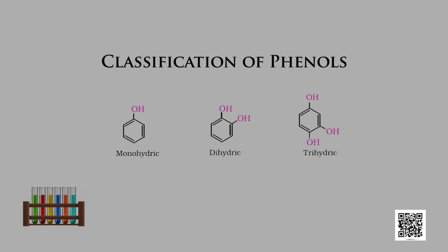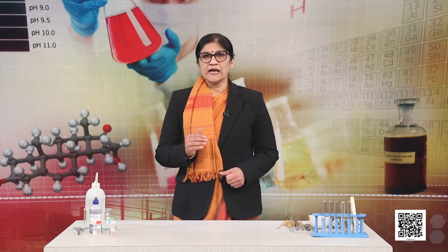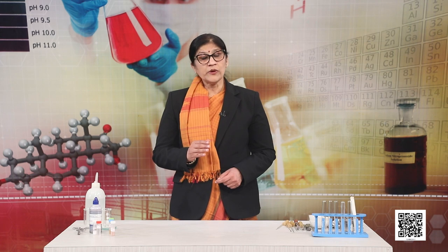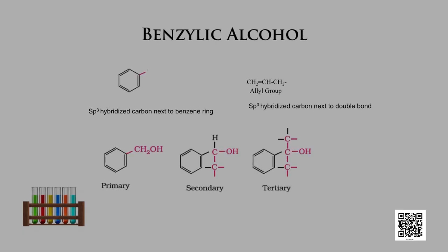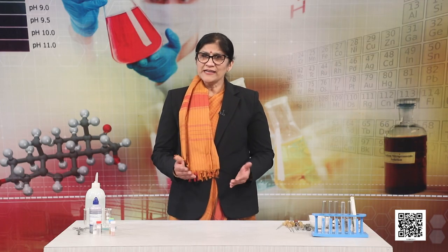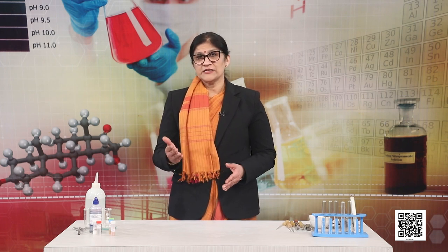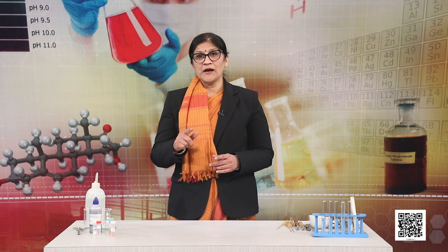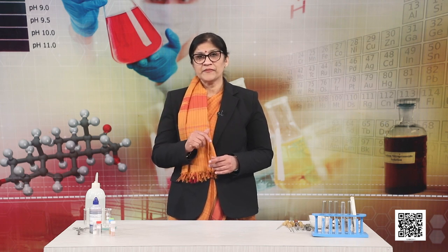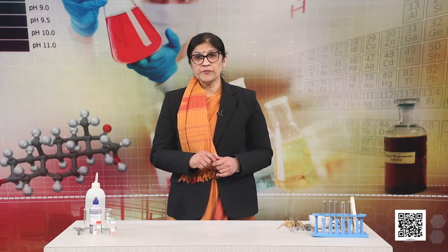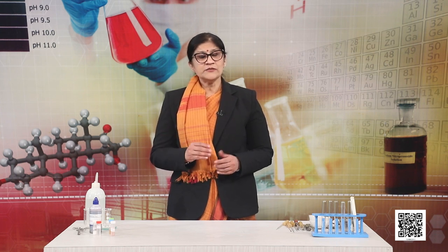In benzylic alcohols, the OH group is attached to the sp3 hybridized carbon atom next to an aromatic ring — the carbon on the benzene ring carries the OH group. Compare these with allylic alcohols: CH2=CH-CH2OH. There is a similarity. We also learned about vinylic alcohols, which contain the OH group bonded to a carbon-carbon double bond, that is to a vinylic carbon — compounds containing OH groups linked to sp2 hybridized carbon.